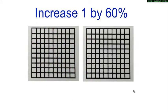Let us now increase 1 by 60%. Shade 1 whole 10 by 10 grid and 60 squares in the second grid. What does this represent?